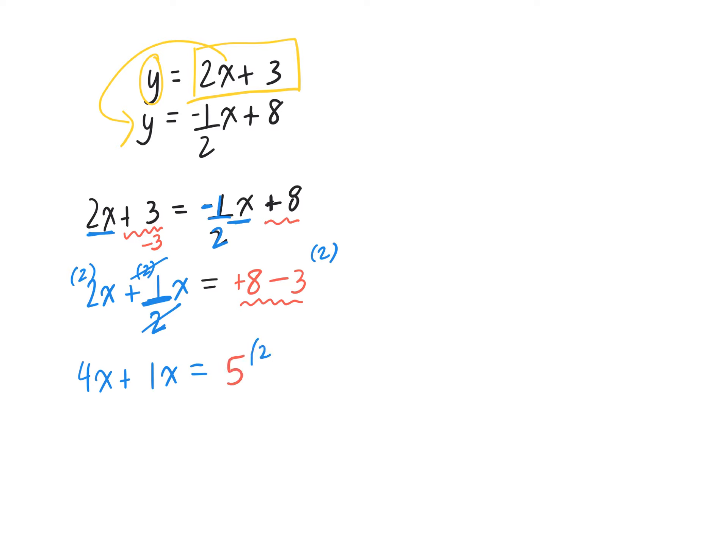And I have to multiply that by 2 as well. If I'm multiplying one term by 2, I have to multiply everything by 2. I'm just getting rid of the fraction. So 4x plus 1x equals 5 times 2. 5x equals 10. So x equals 2.